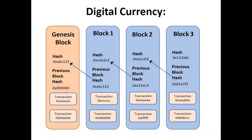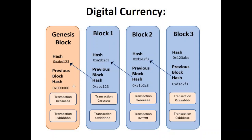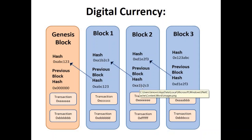The first block in the chain has no previous block hash — it is recorded as 000 — because there is no block before it. This is known as the genesis block. Every other block contains a link to the previous block. In an exam, you may be given a blockchain diagram where the previous block hash is missing, and you will simply need to write the value by looking at the hash of the previous block in the chain. Calculating a hash is beyond the scope of the syllabus.